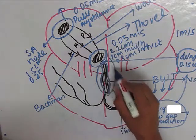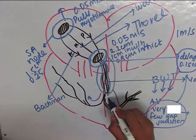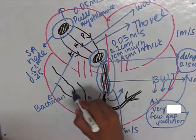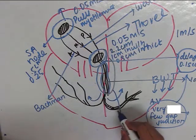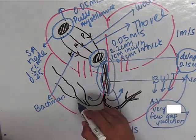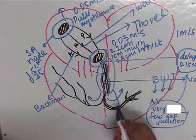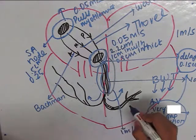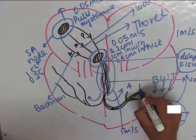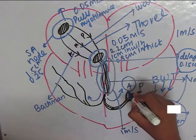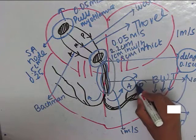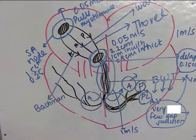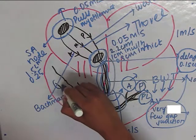Now the bundle of His divides into two branches: the right bundle branch and the left bundle branch. The right bundle branch is usually thinner and longer. The left bundle branch is thicker and shorter. The right bundle branch supplies the right ventricle and the left bundle branch supplies the left ventricle. The left bundle branch is again divided into anterior and posterior division. Anterior division supplies the anterior portion of left ventricle and the posterior division supplies the posterior and lateral portion of left ventricle.